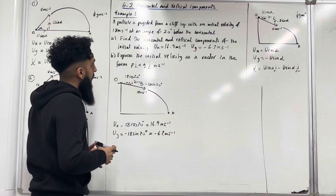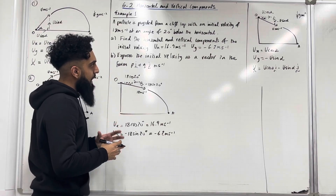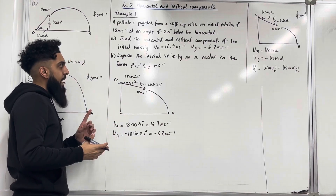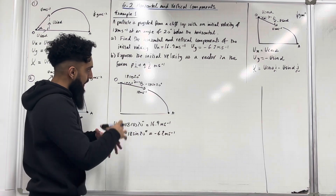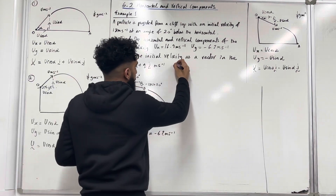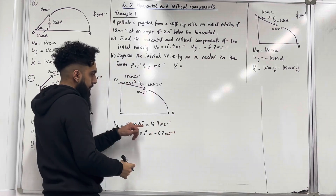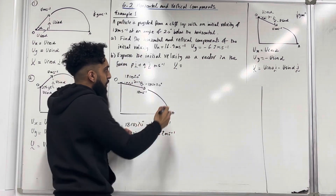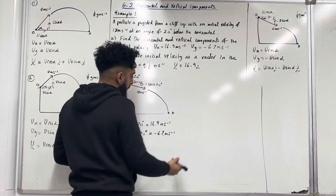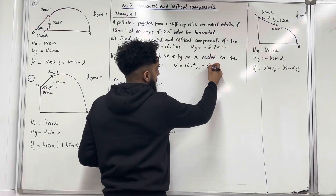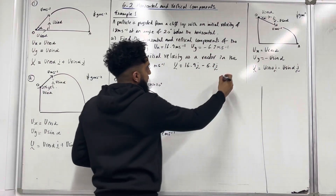For part B, express the initial velocity as a vector in the form pi plus qj meters per second. We have u = 16.9i minus 6.2j meters per second. That completes example one.